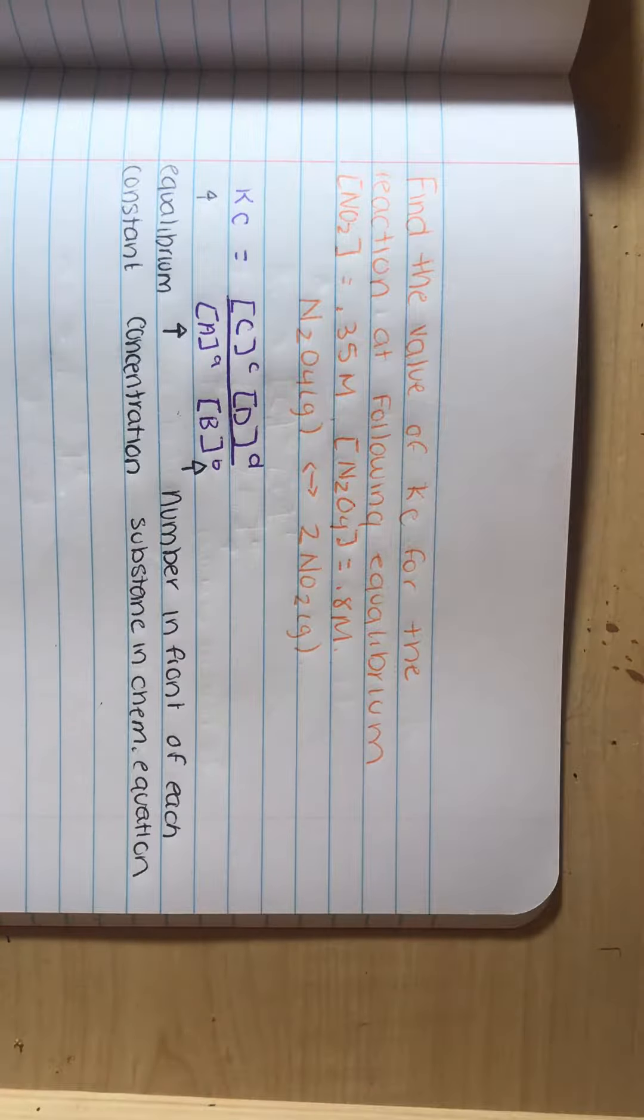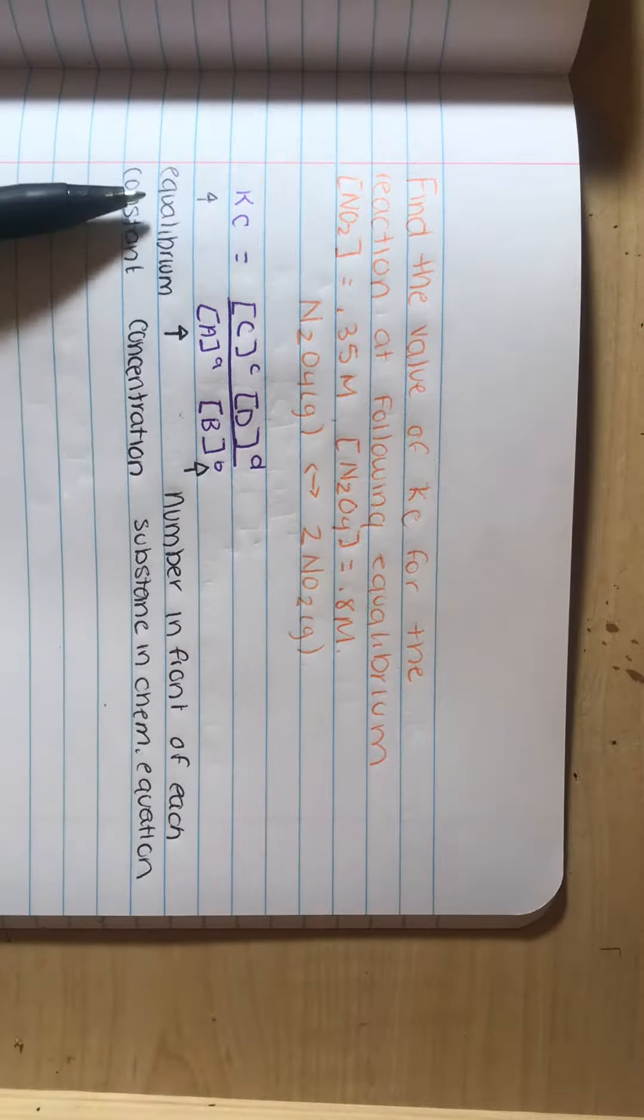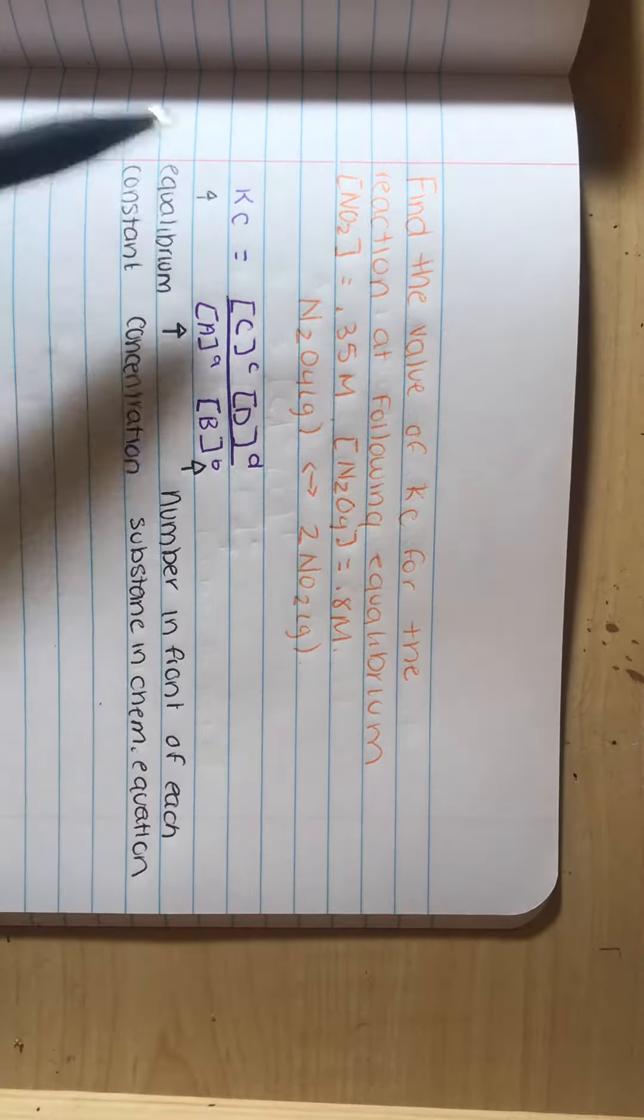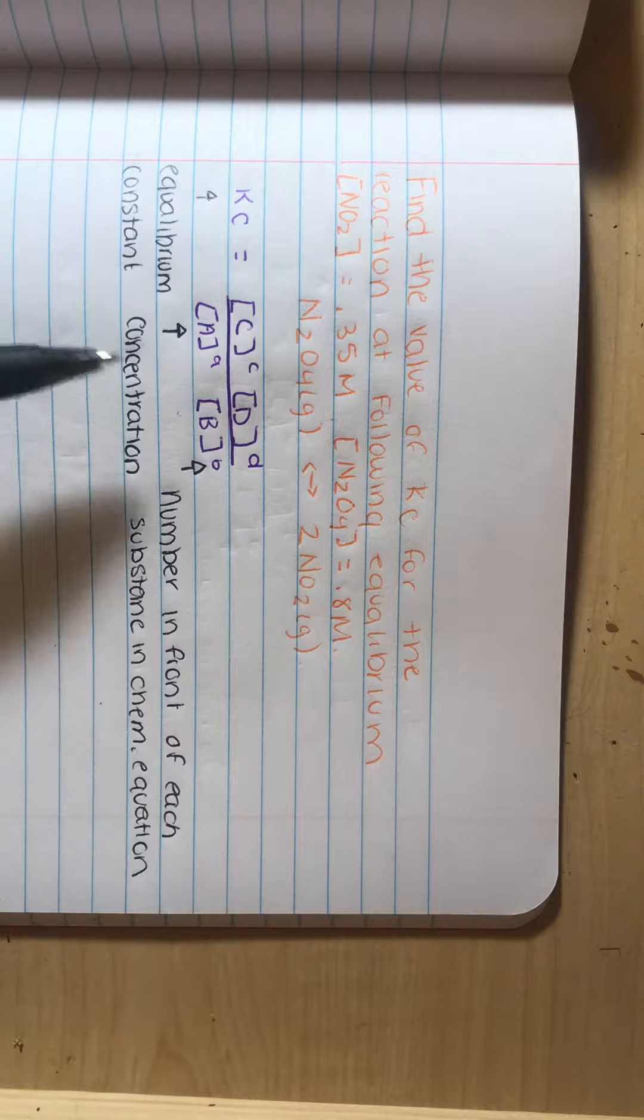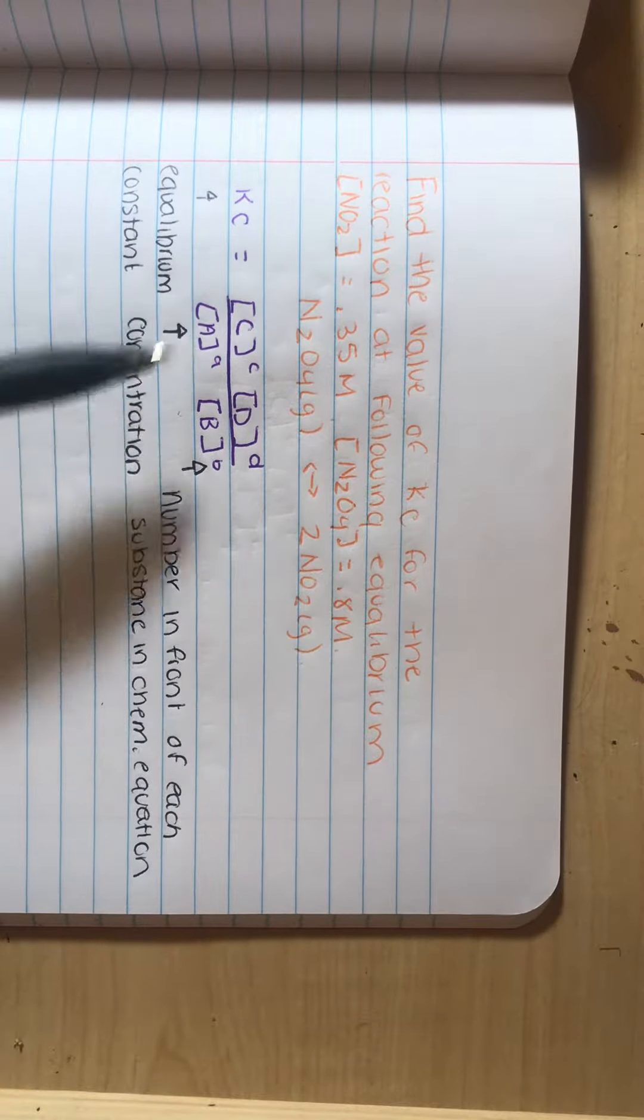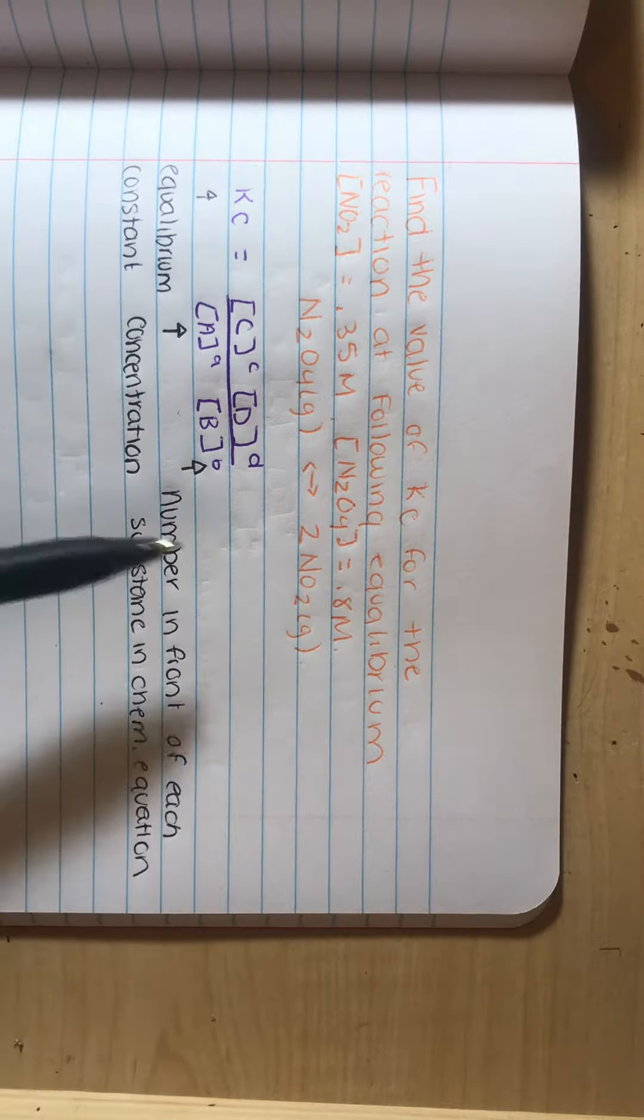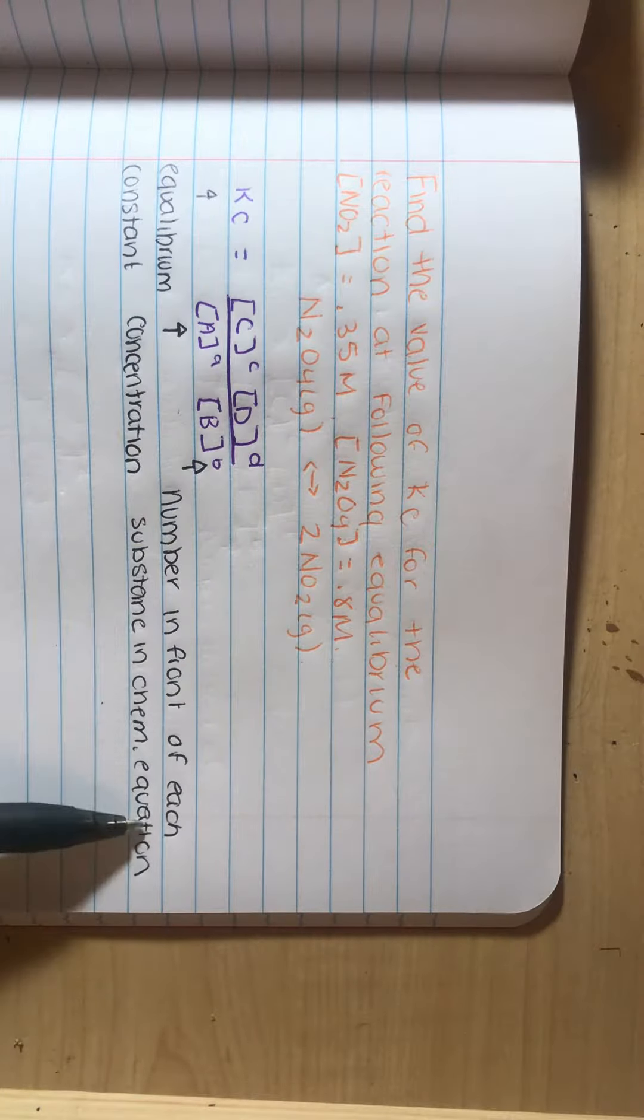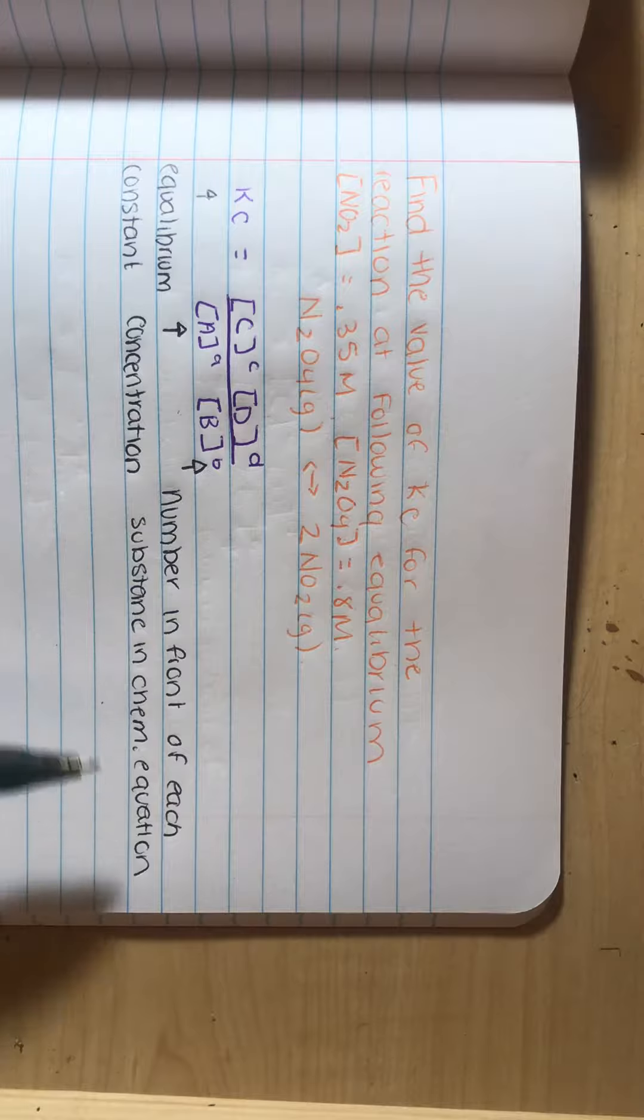We're going to use the equilibrium constant equation, which is this one that I have above. Once again, Kc is the equilibrium constant. The A inside the brackets is for concentration, and that little letter on top is the number in front of each substance in the chemical equation.